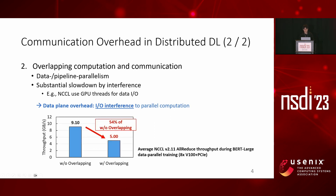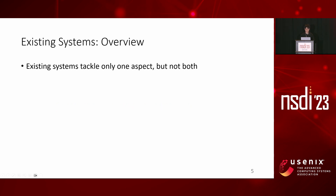For example, in our experiments comparing average NCCL all-reduce throughput during BERT-Large data parallel training, overlapping computation and communication degrades the all-reduce throughput to 54 percent of the throughput without overlapping. Now we have discussed two aspects of overhead: event handling and I/O interference.